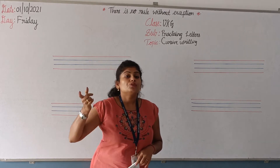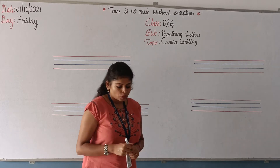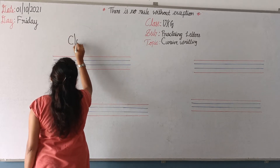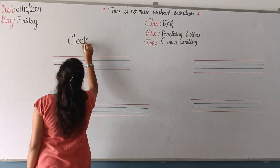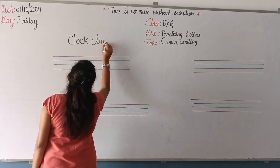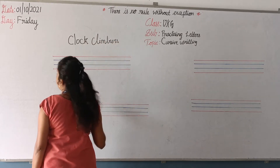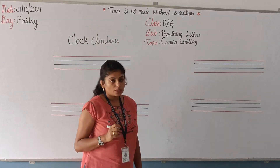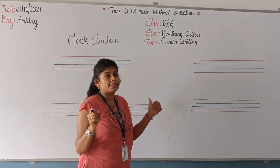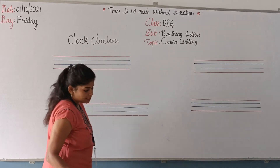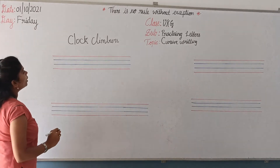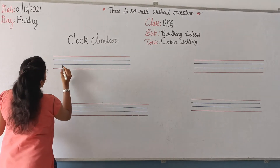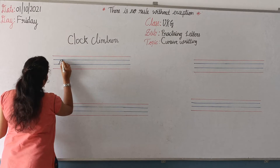Before starting the writing letters, first we have to practice these letters. The first group is called clock climbers — C-L-O-C-K C-L-I-M-B-E-R-S. We will call this group the clock climbers. Please look at the board. Under this group, there are five letters. Please watch this video carefully.